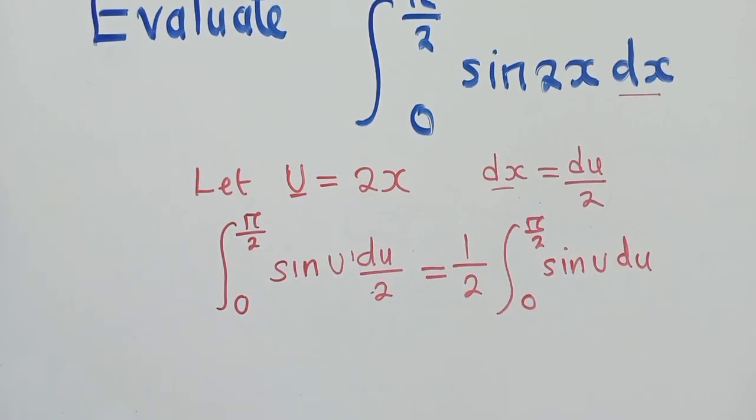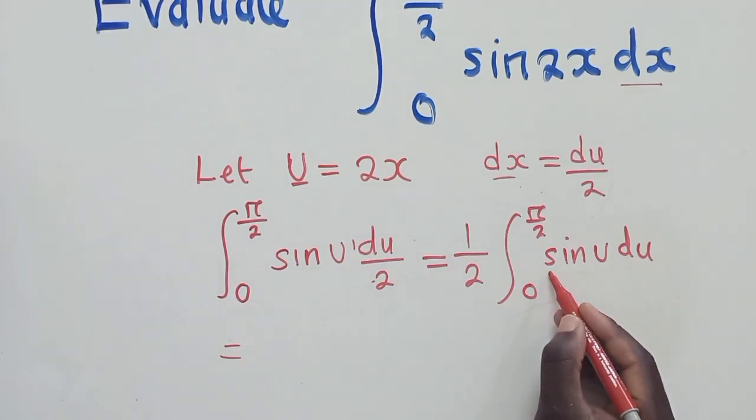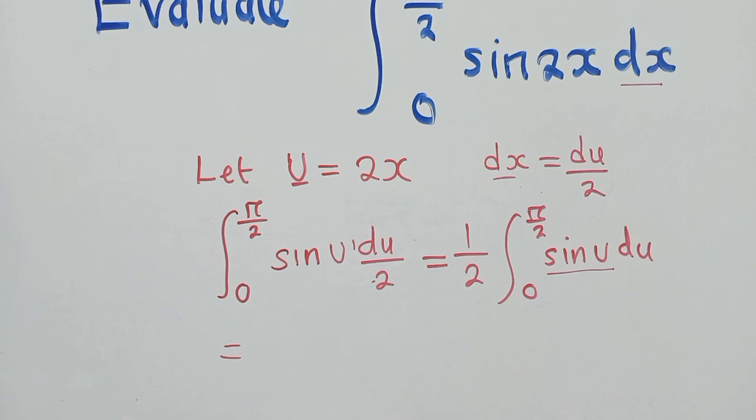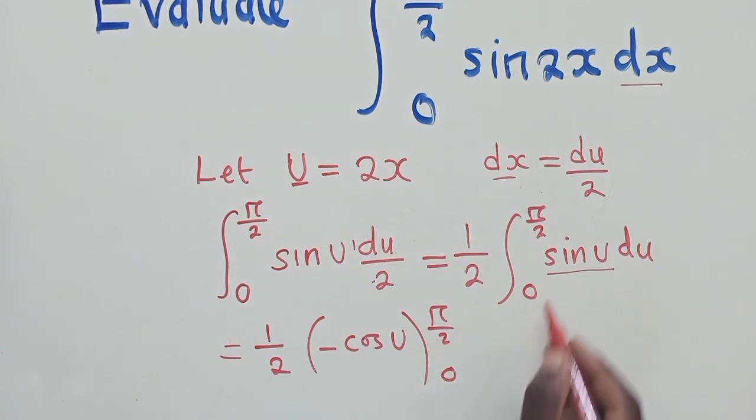Now from this stage, remember the point where I said the integral of sin u is equal to negative cos u. So it will be 1 over 2, negative cos u there, and the limit, 0 is here, π/2 is right here. So the integral of sin u, I showed you when starting, it's a negative cos u.